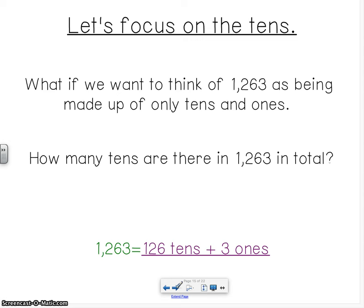Let's focus on the tens. What if we want to think of 1,263 as being made up of only tens and ones? How many tens are there in 1,263 in total? If I was asked this question, I would think right away, well, I know that there's 3 ones, so I'm just going to get those ones out of the way. And then, well, I know this is the tens place, but if I don't have a hundreds place and I don't have a thousands place, then would that mean that there's 126 tens? It would. Good job.